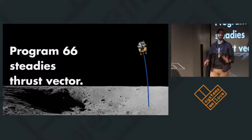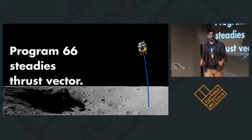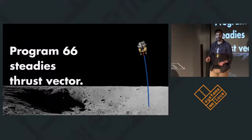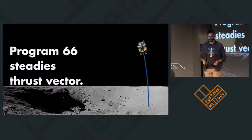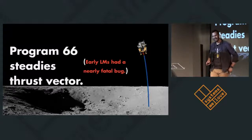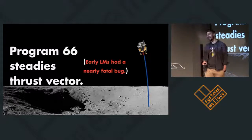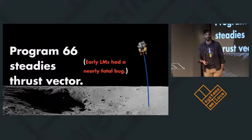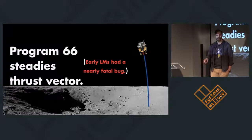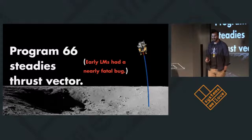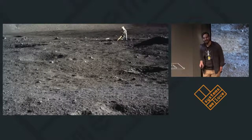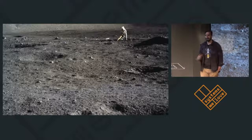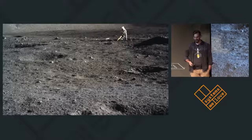And program 66 steadies the thrust vector. So basically, you're landing on a column of fire, and you need that column of fire to keep scaling itself up and down. And it uses a PID controller to control this vector. The fun thing is, the early lunar modules actually had a nearly fatal bug in this PID controller. It actually wasn't stable. So if the astronauts had gotten particularly squirrely, they would have caused the PID controller to go out of whack, and then the lunar module would have flipped over onto its side. And then you die. But nobody died. Of all of the people that went to the moon, only one crew didn't get to the moon. That was Apollo 13. But it wasn't the computer's fault. It was an oxygen tank that popped.